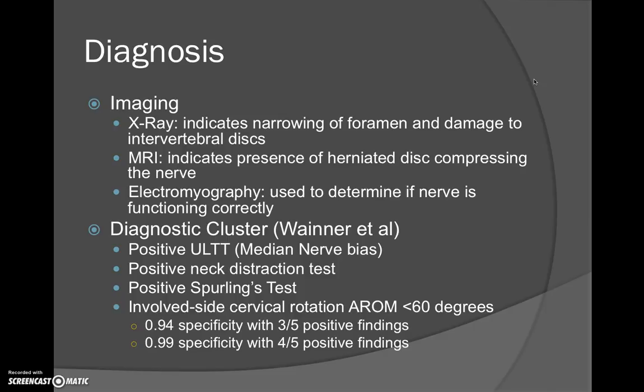One of the better researched methods of diagnosing cervical radiculopathy is the diagnostic cluster developed by Wainner et al. This cluster consists of: a positive upper limb tension test biasing the median nerve, positive cervical distraction, positive Sperling's test, and decreased active cervical range of motion of less than 60 degrees to the affected side. The cluster demonstrates 94% specificity with three out of five positive tests, and 99% specificity with four out of five positive tests.